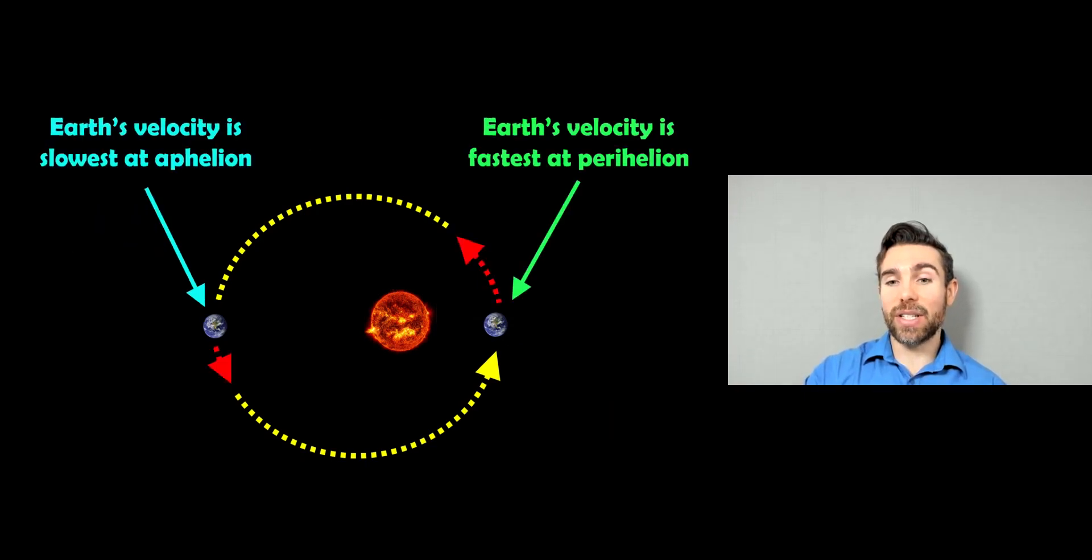Now, the bit that's interesting here is that the Earth's velocity on its orbit is faster at perihelion than on the opposite side. So on the opposite side, it's travelling slower, but as it gets closer to the Sun, at its closest approach, it's orbiting at its fastest.